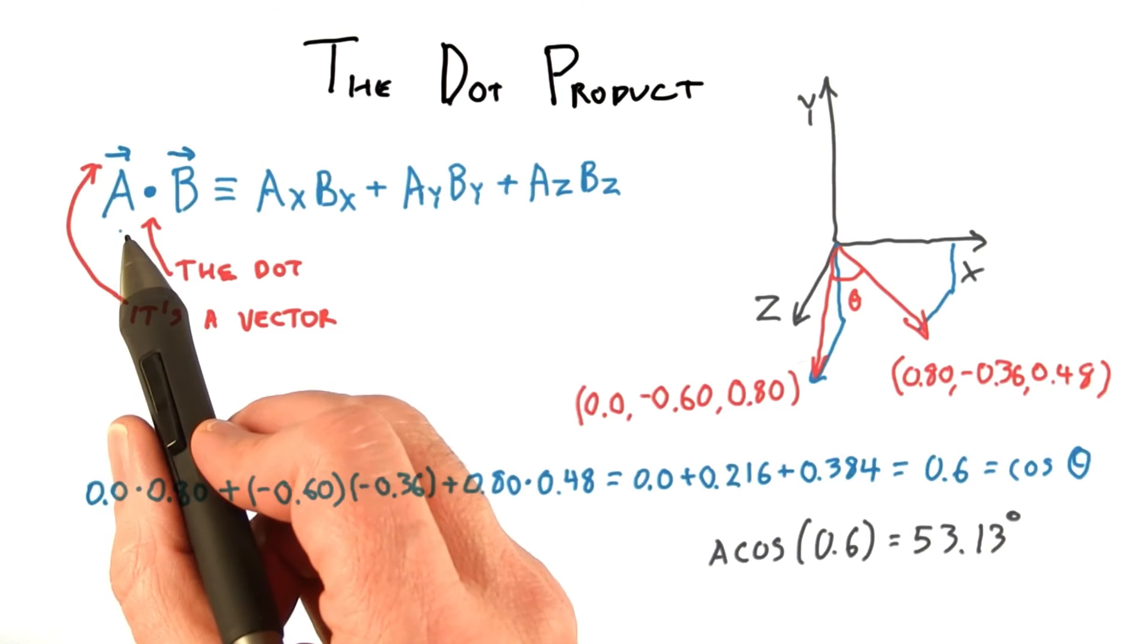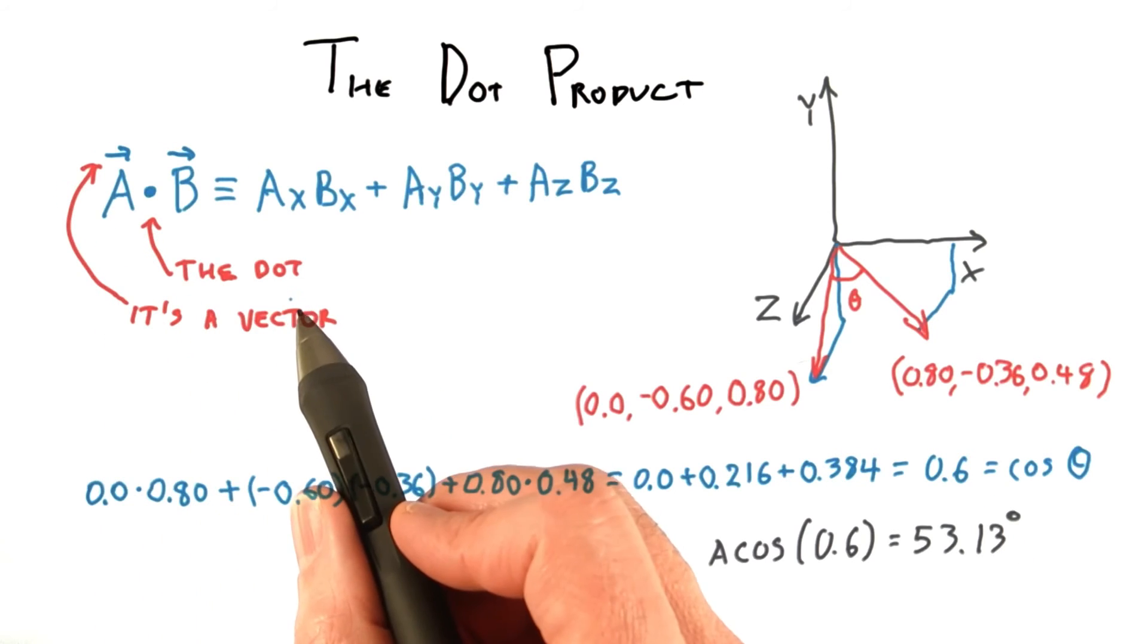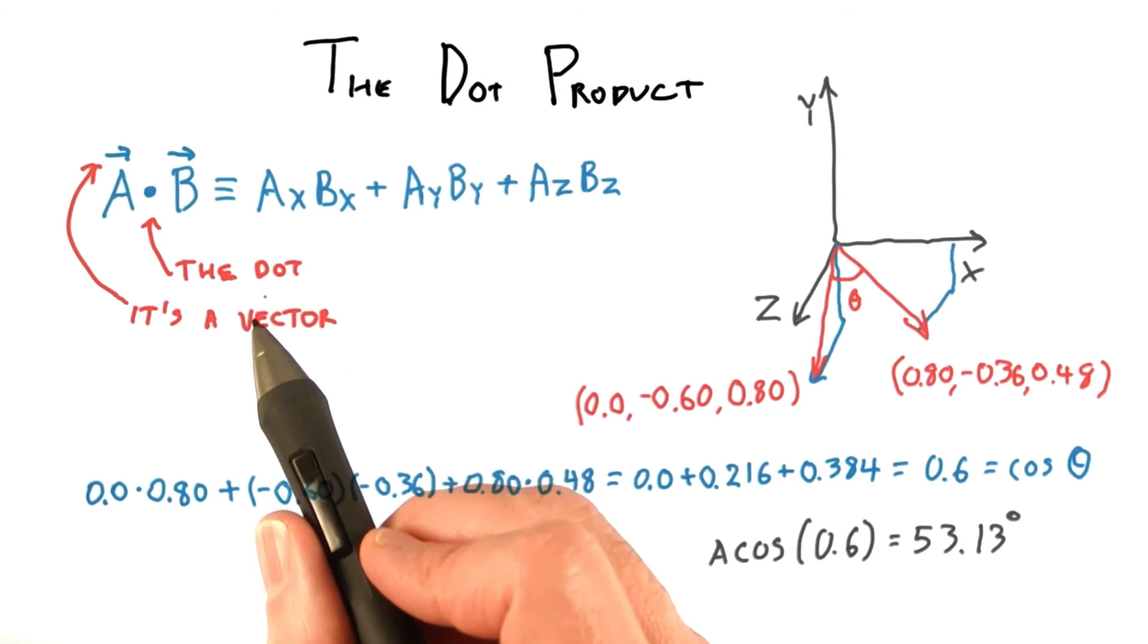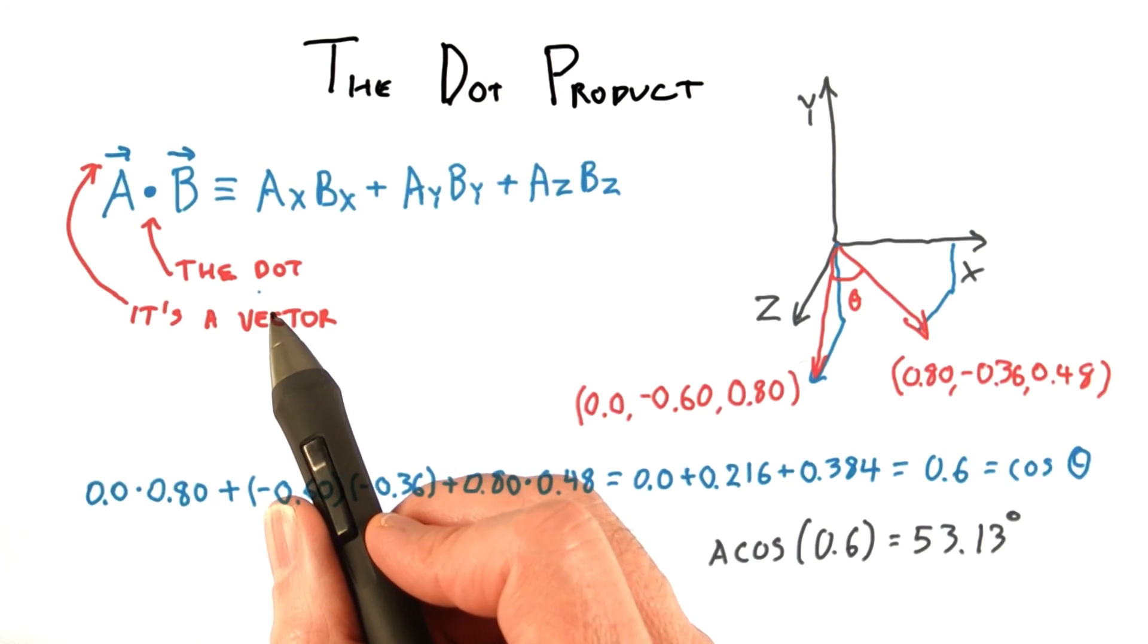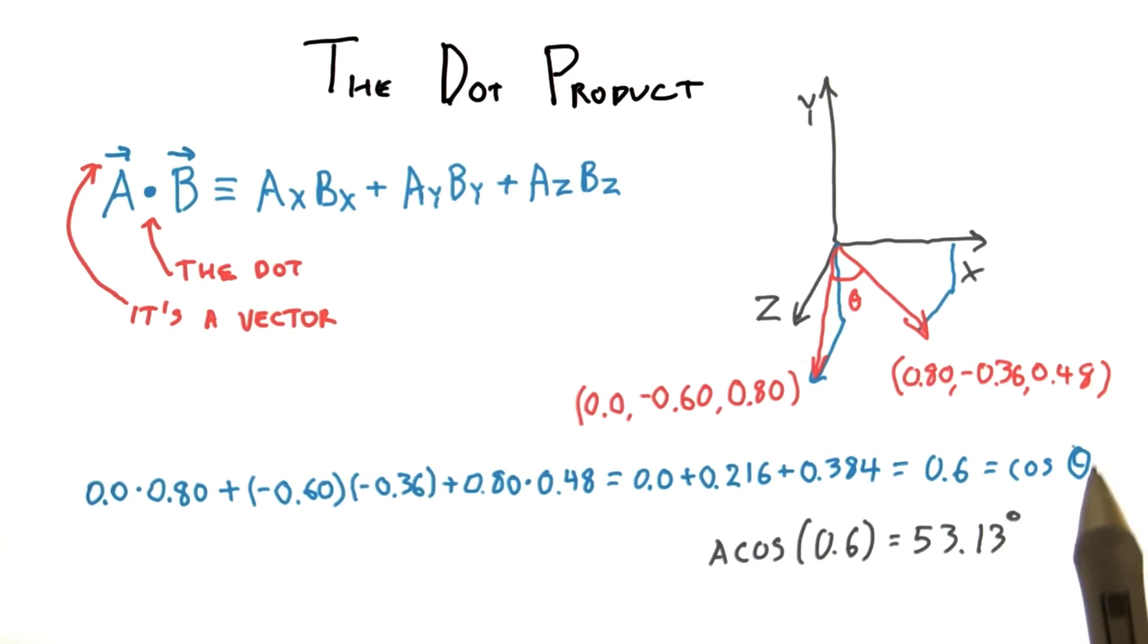The dot product is a little mysterious, and is so fundamental to a large part of computer graphics that it's worth building up some understanding of what it really means. Why does this operation have any connection with cosine?